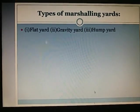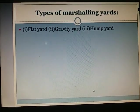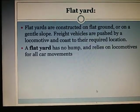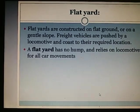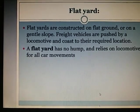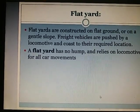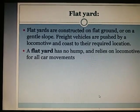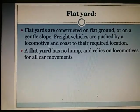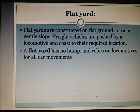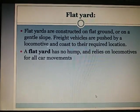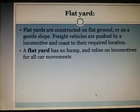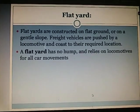Types of marshalling yards: There are three types — flat yards, gravity yards, and hump yards. Flat yards are constructed on flat ground or on a gentle slope; freight vehicles are pushed by the locomotive and coast to their required location. A flat yard has no hump and relies on locomotives for all car movements.